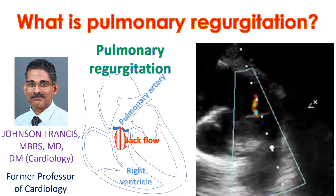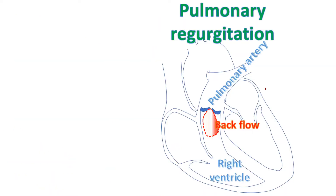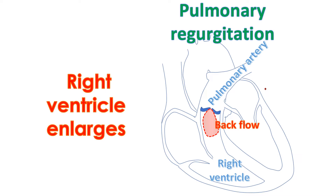A minimal leak of the pulmonary valve is common in many normal persons, which can be detected by very sensitive tests like color Doppler. But if the leak is severe, it increases the workload of the right ventricle as it has to pump back this extra load during the next contraction.